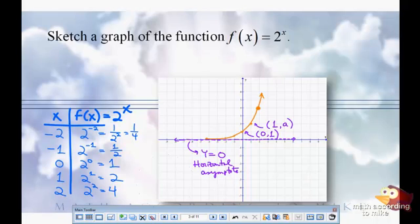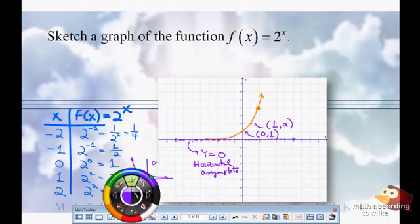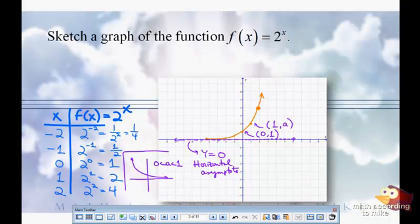When your base is bigger than 1, the graph increases. So, our base is 2, which is bigger than 1. It increases. If your base is between 0 and 1, it decreases. And, actually, as it turns out, it's just a reflection over the y-axis. So, this is if your base is between 0 and 1. But, it's going to have that shape. That sharp increase for a bigger than 1, a sharp decrease if a is between 0 and 1.